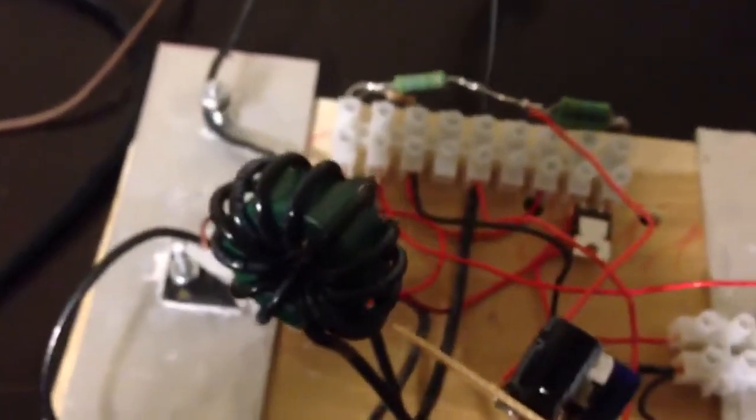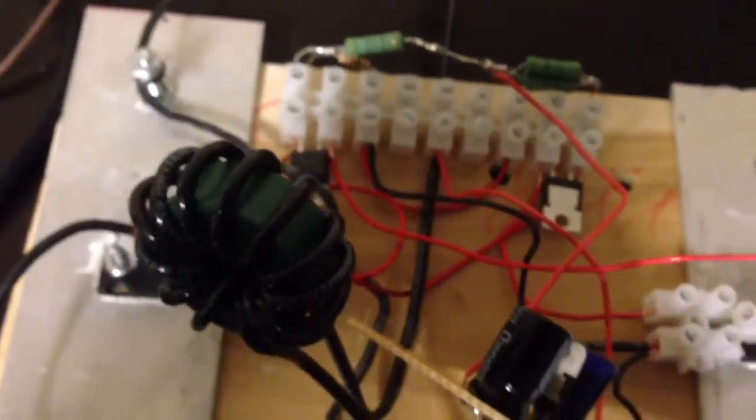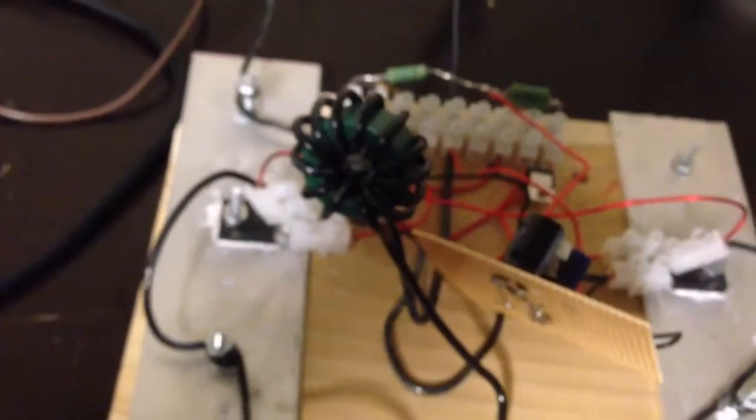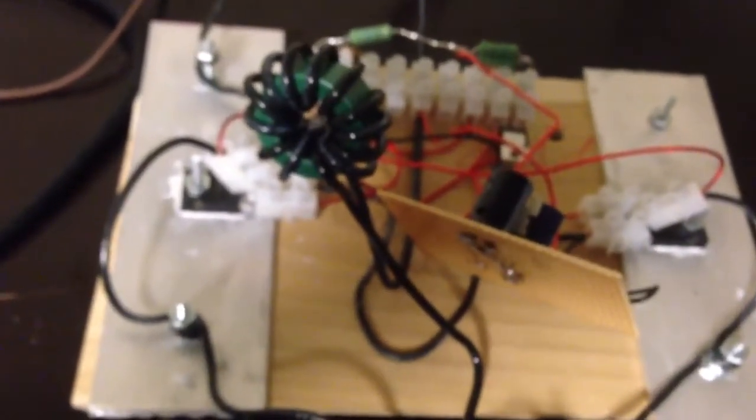Here's both MUR860s, one there and one there. That contributes to heating, and also they're not as fast as Schottkys. But I am actually planning to use some Schottkys. I want to use some really high voltage, high current Schottkys. Those are still on order from eBay.